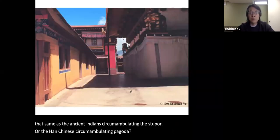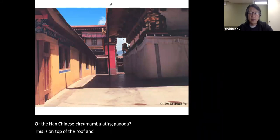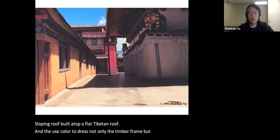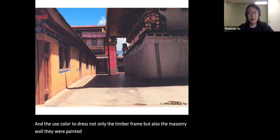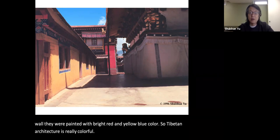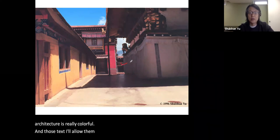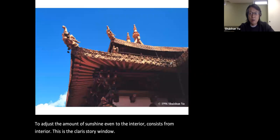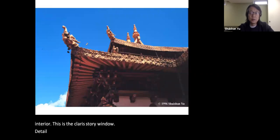On top of the roof, gigantic sloping roofs are built atop the flat Tibetan roof. They use color to dress not only the timber frame but also the masonry wall, painted with bright red, yellow, and blue colors — Tibetan architecture is really colorful. Textiles allow them to adjust the amount of sunshine into the interior, as seen from the clerestory windows. There is a lot of gilded decoration on the roof.